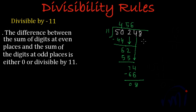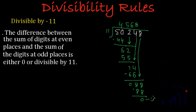Noting this 8 down, it becomes 88, and 11 eights are 88, remainder 0. So we got our remainder as 0, which means 50,248 is completely divisible by 11.